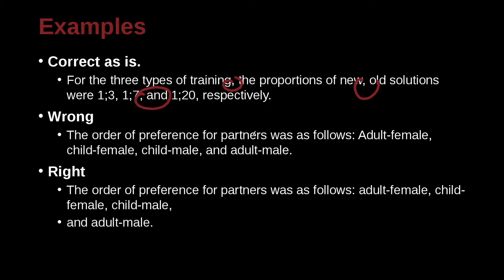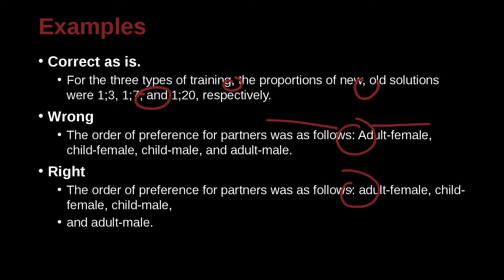The order of preference for partners was as follows: adult female, child female, child male, and adult male. Here we have a colon with a capital A. We just looked at what that means: a sentence followed by another sentence, put together closely. But that's not the case here — we just have a sentence and then a list, and the list is explaining the details. So here we use a colon with no capital. Remember: no space before the colon, one space after, and then no capital.